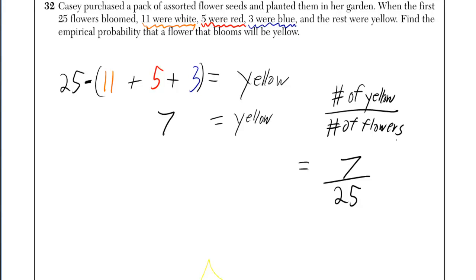Casey purchased a pack of assorted flower seeds and planted them in her garden. When the first 25 flowers bloomed, 11 were white, 5 were red, 3 were blue, and the rest were yellow. Find the empirical probability that a flower that blooms will be yellow.